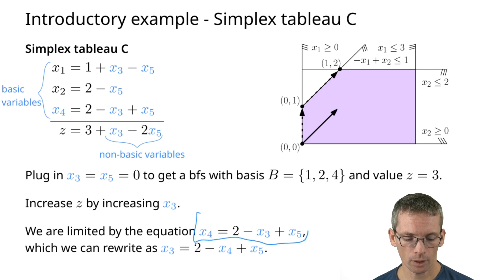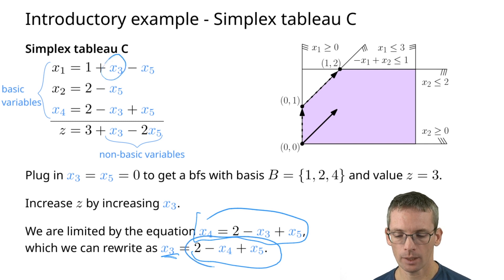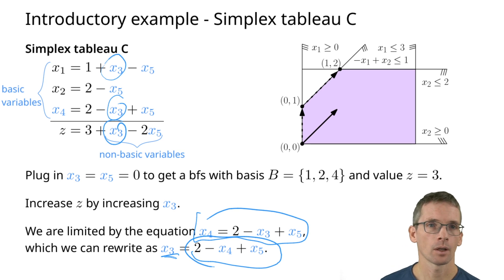Now we're going to do the pivot step swapping in x3 into the tableau for x4. We take this equation in x4, we rewrite it to have x3 on the left hand side, and now we have to again take this here, replace x3 here, here and there. Maybe you pause the video and try to write down the simplex tableau.